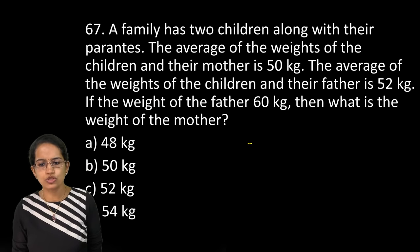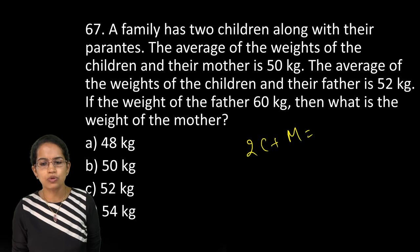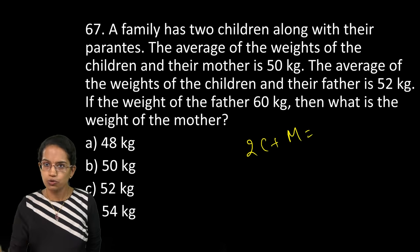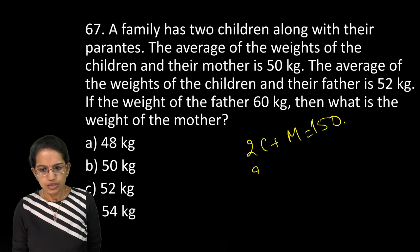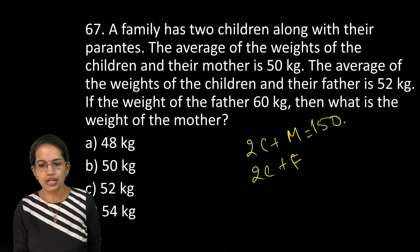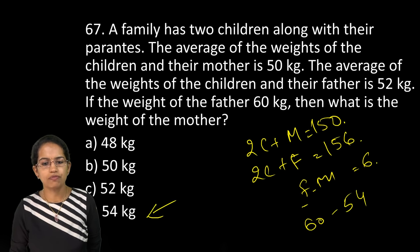The next is a family has 2 child plus the mother which weighs 50. So the total weight would be 50 into 3. That's 150. Now 2 child plus father, the weight would be how much? 52 into 3. That is 156. So father minus mother would be 6. Now father is 60. So what would be mother? 54. So mother's weight would be 54 kg.